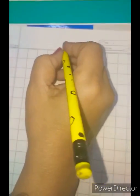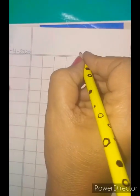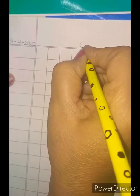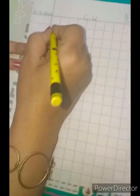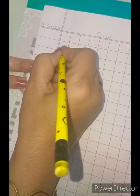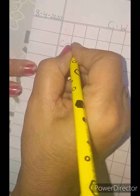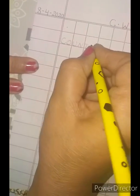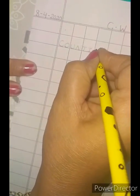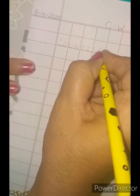And in the center of the paper, write down capital C dot W, which means classwork. Now, leave one block, put a small dot, and write here counting: C-O-U-N-T-I-N-G.